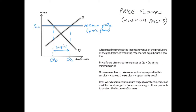The next diagram is for price floors, also known as minimum prices. Minimum prices are often used to protect the income or revenue of producers when the free market equilibrium price is too low. The government legislates a price floor above the equilibrium price. Price floors create surpluses because at the floor price, quantity supplied is greater than quantity demanded. The government then has to take action — for example, buying up the surplus, which increases demand but uses tax revenue, entailing an opportunity cost.